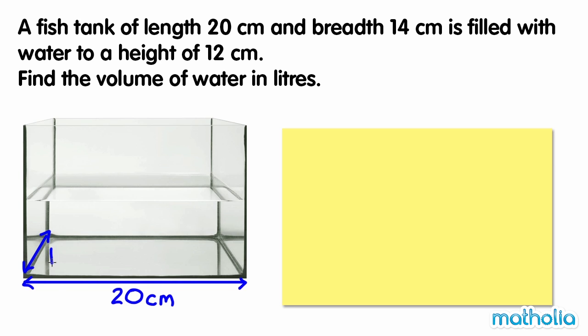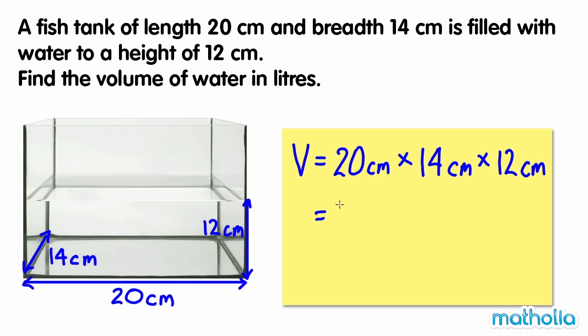We can find the volume of water by multiplying the length by the breadth by the height. Using a calculator, 20 times 14 times 12 equals 3360.